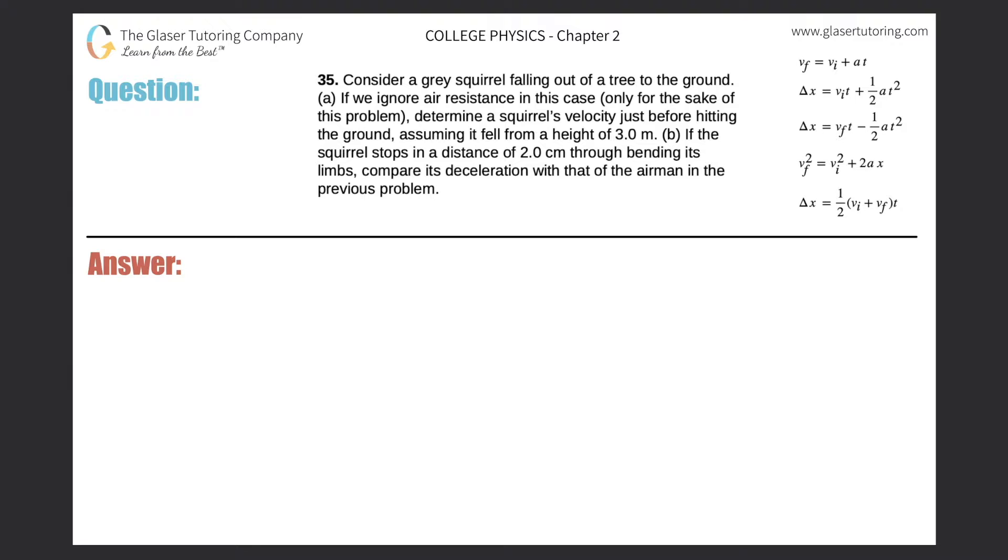Number 35. Consider a gray squirrel falling out of a tree to the ground. Part A: If we ignore air resistance in this case, only for the sake of this problem, determine the squirrel's velocity just before hitting the ground, assuming it fell from a height of 3 meters.